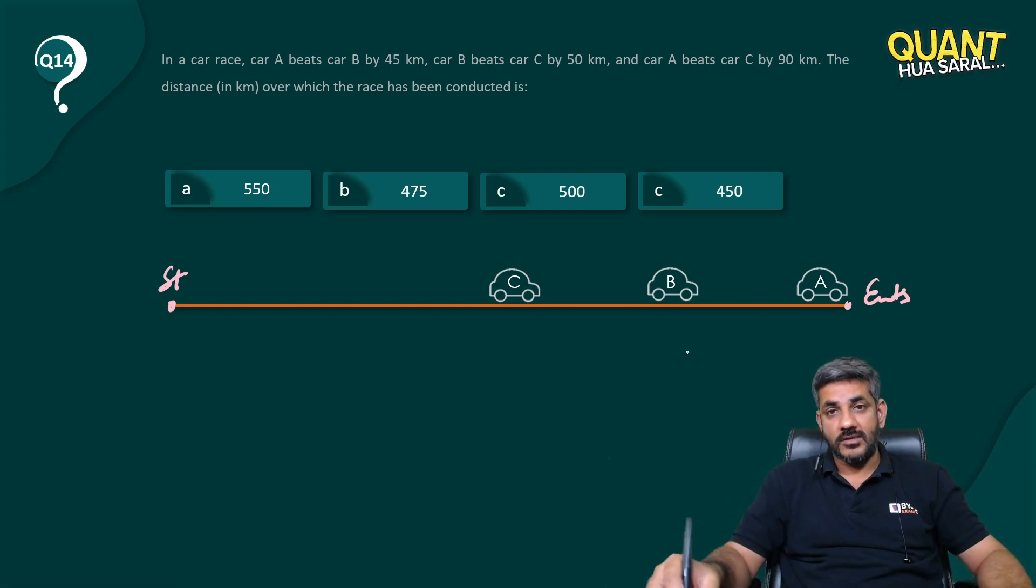First situation is car A beats car B by 45 kilometers. So when car A is here, that is at the finish line, he says car B is 45 kilometers behind. So the gap between car A and car B is 45 kilometers, right?